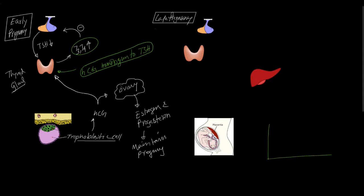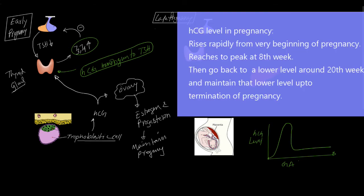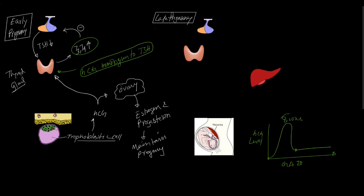During the late part of pregnancy, what occurs? During early pregnancy, the HCG level sharply rises from the very beginning of pregnancy, reaches its peak around eight weeks, and then goes sharply down to a lower level around 20 weeks. From 20 weeks onwards until termination of pregnancy, this lower level of HCG is maintained. So the high level of HCG acts on the thyroid gland to produce more T3 and T4 only during the early part of pregnancy. During the late part, when HCG comes down to a lower level, it cannot act on the thyroid gland as before.